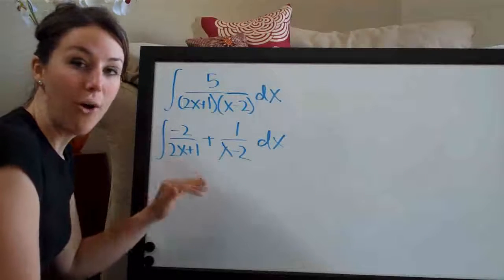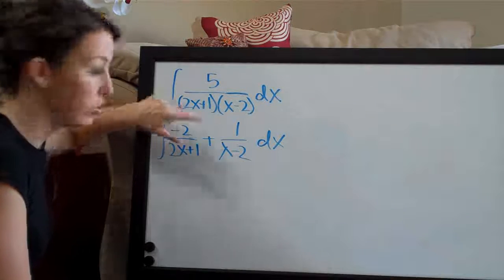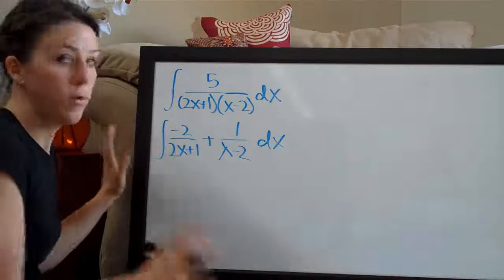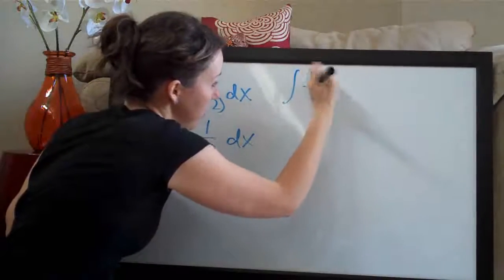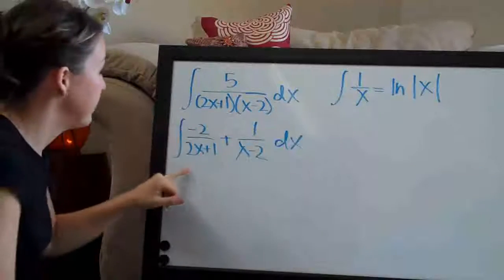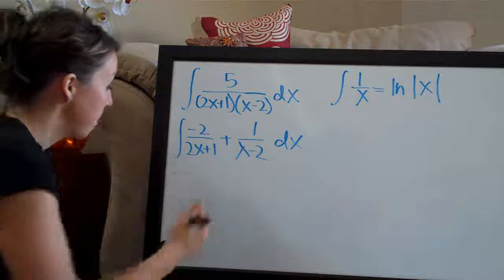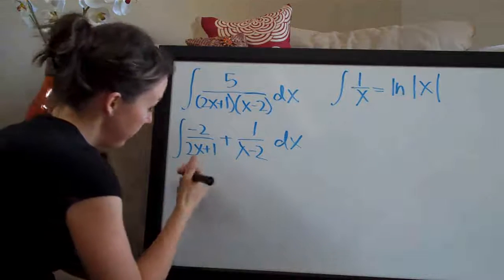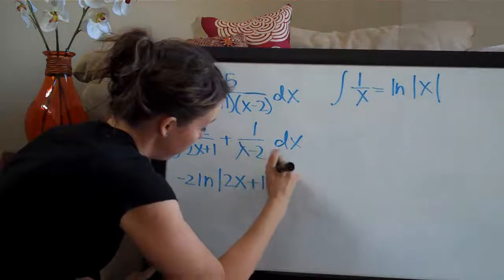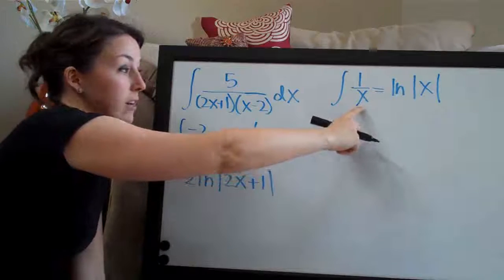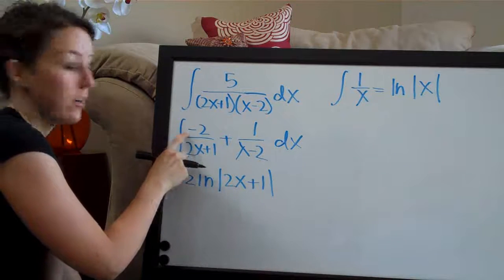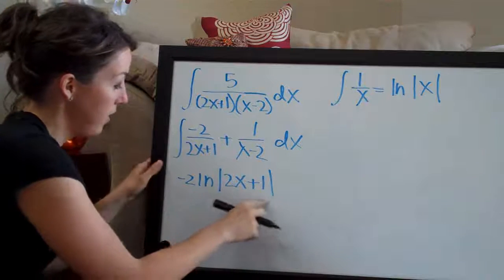Partial fraction problems almost always end the same way: you have a simple number in the numerators and one of the linear terms in the denominator. The most important formula we need here is that the integral of 1/x equals ln of the absolute value of x. Taking the integral one term at a time: -2/(2x+1) turns into -2 times ln|2x+1|. The denominator goes inside the absolute value, and the numerator is multiplied out in front.